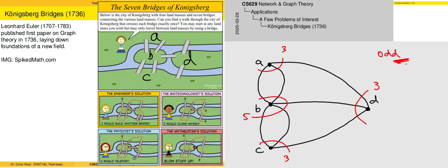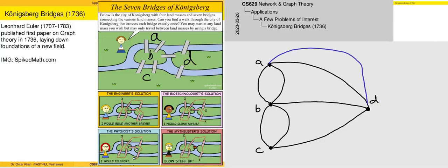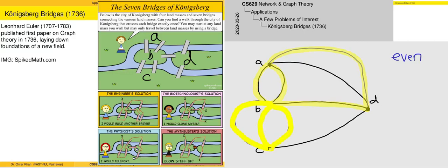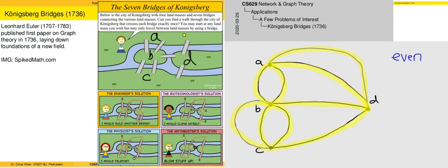Is this meaningful? Euler suggests that it is. What would happen if the graph were supposed to be even? We could try it out. In this case, we insert two edges and now the graph is entirely comprising of even degree vertices. If we now make a way across this graph, we will be able to see that a path exists. We have just been able to solve the graph on the basis of entirely even degree vertices.